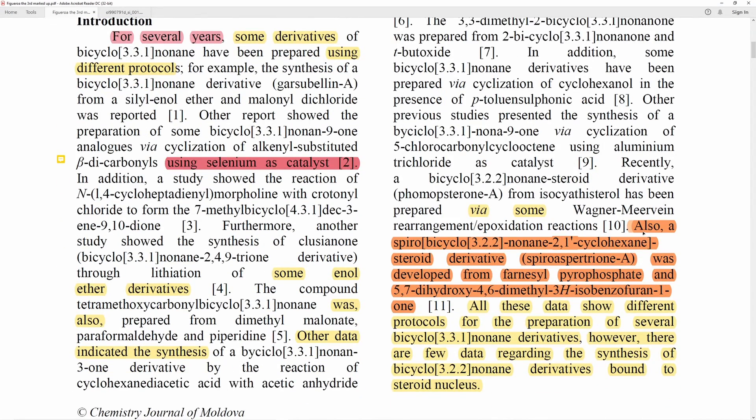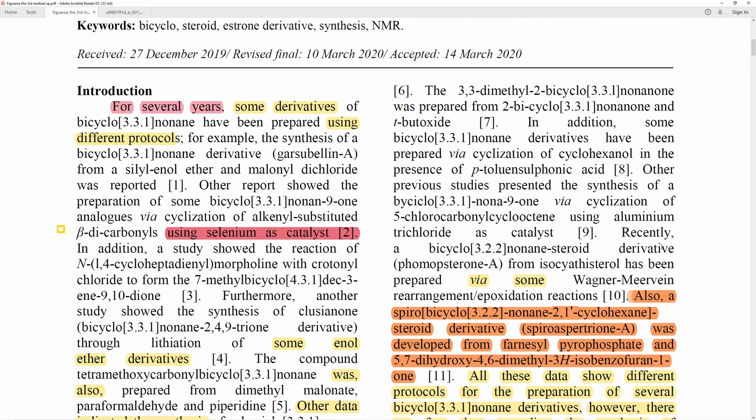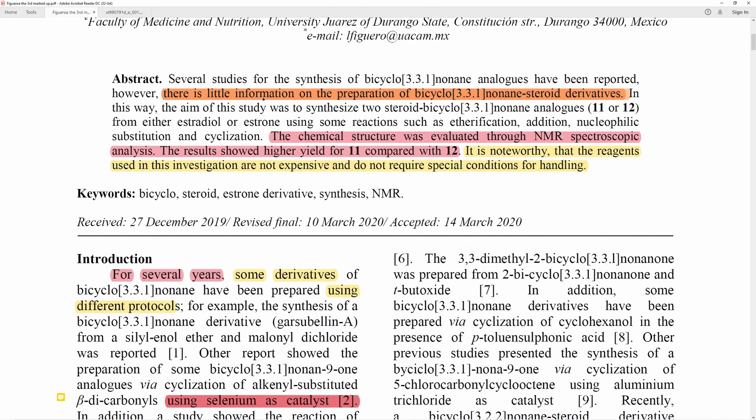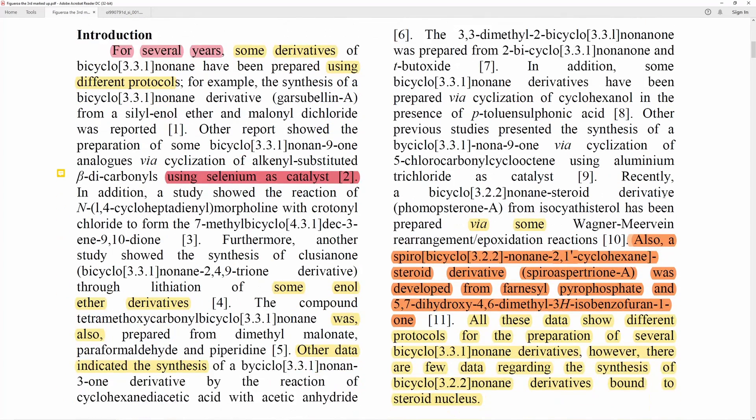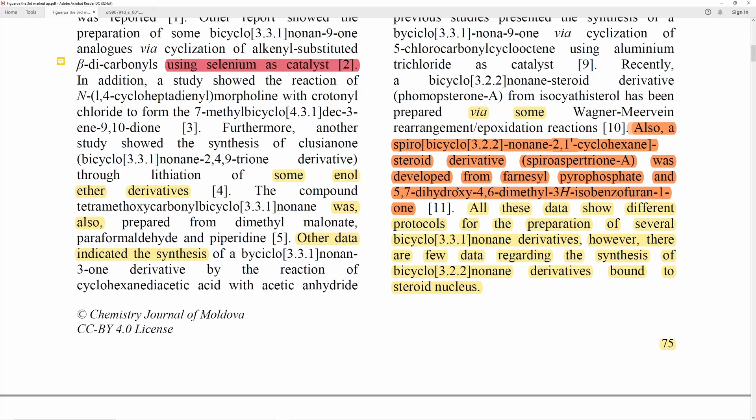They also mention some other methods using some enol derivatives that were also prepared. Other data indicated the synthesis of another bicyclo-331-nonane derivative, but, you know, that is what it is. So earlier I said we were going to put a pin in something, and so right here we see also a spirobicyclo-3221-nonane-21-cyclohexane steroid derivative. Spiroaspertrione A was developed from farnesyl pyrophosphate and 5,7-dihydroxy-4,6-dimethyl-3H-isobenzofuran-1-one. So here he's saying there actually has been another steroid derivative prepared with the bicyclo system, and so, you know, it says there's little information on the preparation. So maybe the little bit of information is just that one entire paper.